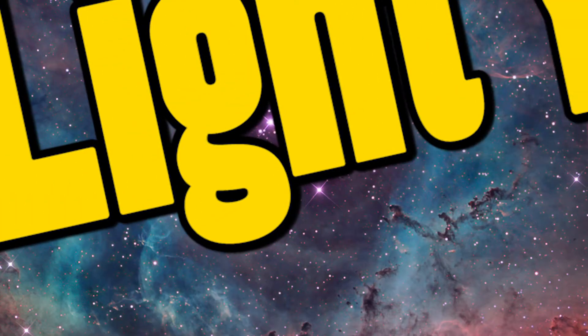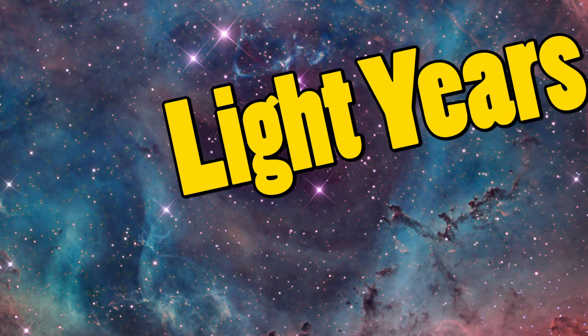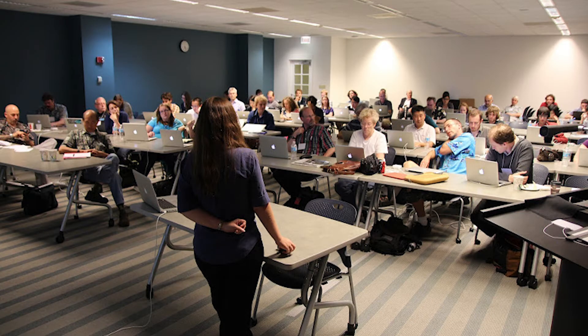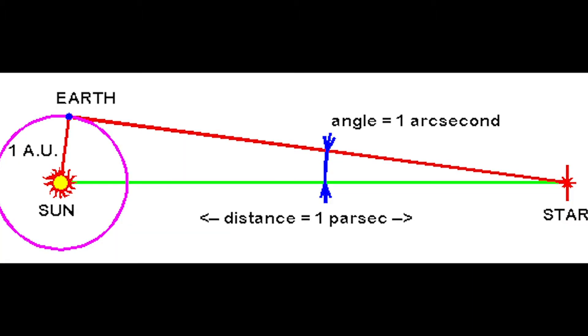You may also have heard about the light year. A light year is the distance that light travels in a year in vacuum. But when astronomers talk, you won't hear much of light years. The term they actually use is a parsec. To find a distance to a star, astronomers use a method called triangulation.